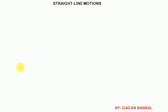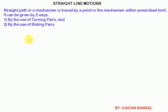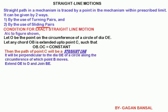Today's topic is straight line motion, or mechanisms with straight line motions. A point on the mechanism traces a straight path within the possible limits of motion. This can be achieved by two ways: by turning pair or by sliding pair. The use of turning pair is preferred for straight line motion because of more wear and bulky size of the sliding pair.